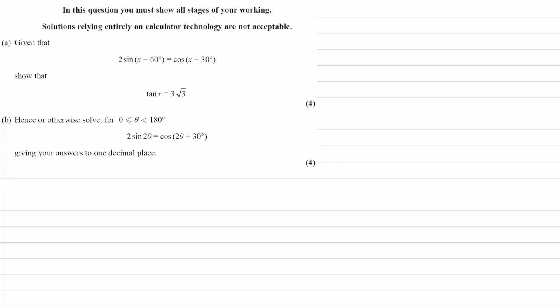Given that 2 sin(x - 60°) = cos(x - 30°), show that tan x = 3√3. Alright, so we're going to have to expand out what we have over here to end up with this equation. Starting with the 2 sin(x - 60°), expanding that out using the addition formulae becomes